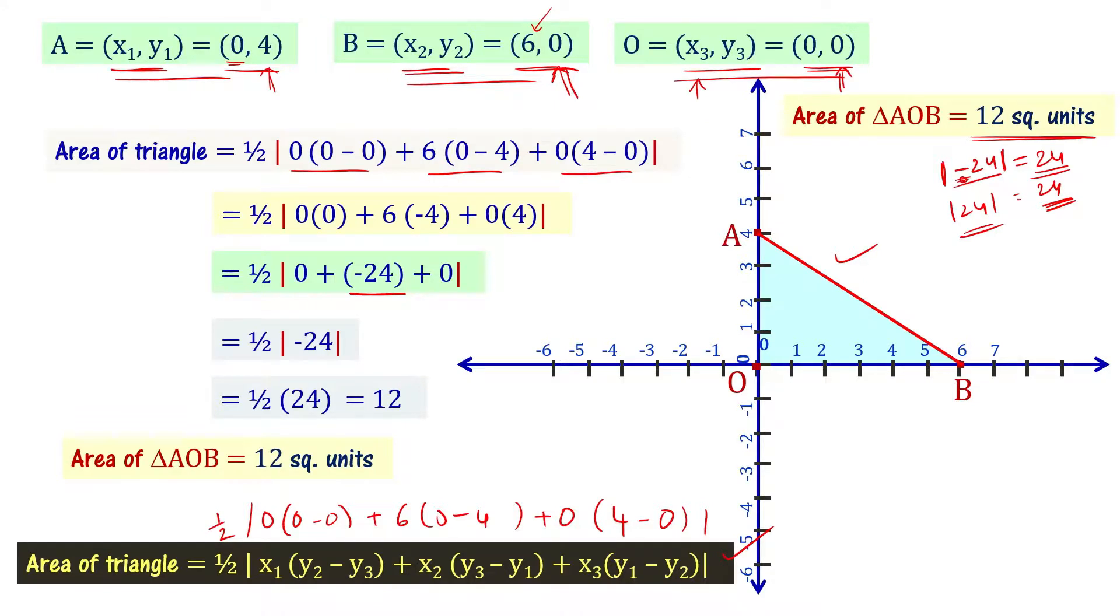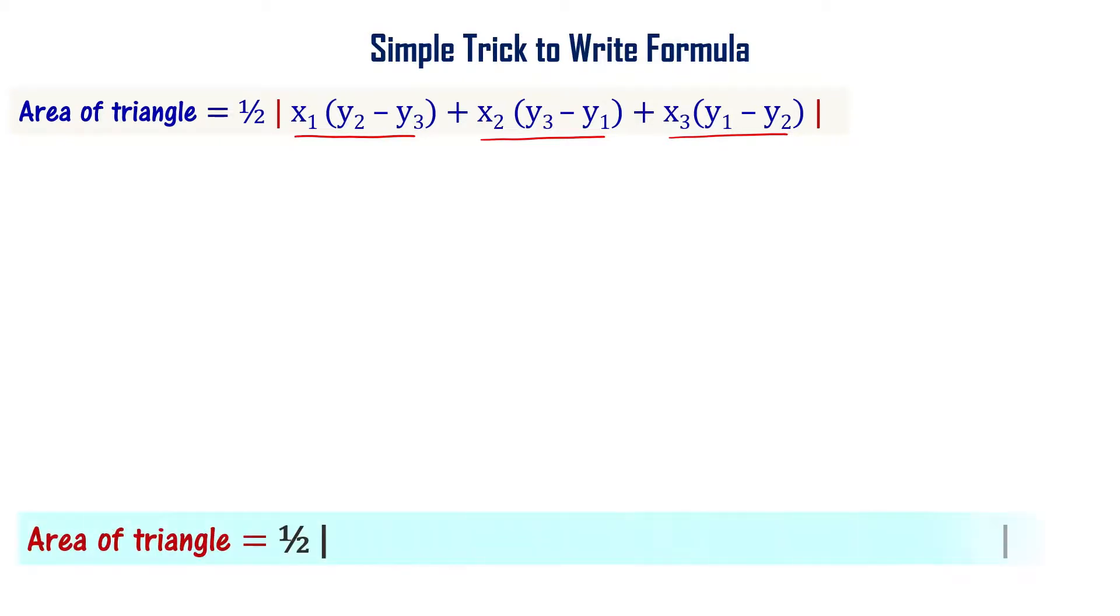The formula is: x₁ times (y₂ minus y₃) plus x₂ times (y₃ minus y₁) plus x₃ times (y₁ minus y₂). That is how we can do this. Area of triangle is equal to half times modulus.